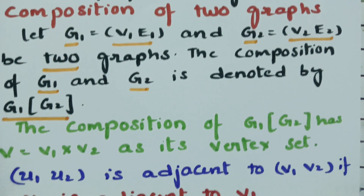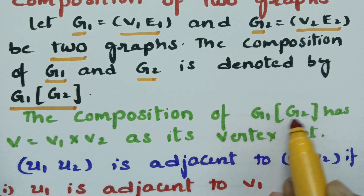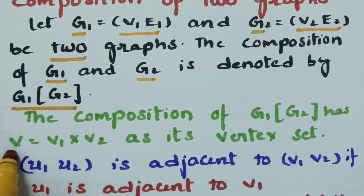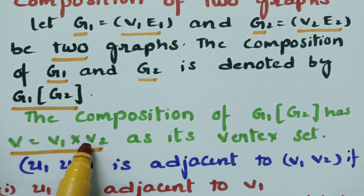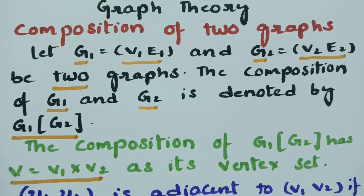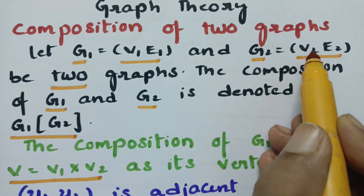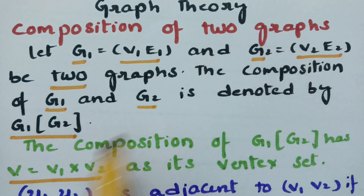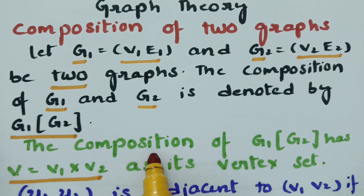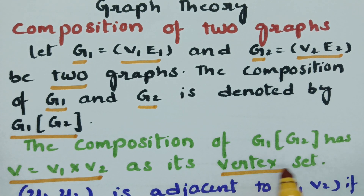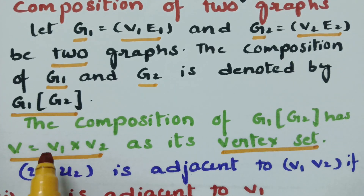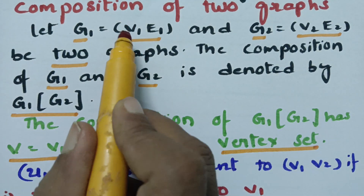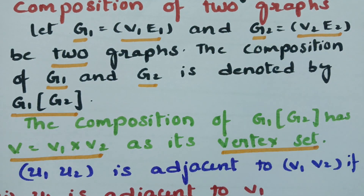There is a condition here. The composition G1 of G2 has the vertex set V = V1 cross V2. This is V1 and this is V2. We have to make a cross product of V1 and V2 in order to get the fresh vertex set for this composition of two graphs. The vertex set is obtained by the cross product of the first graph and the second graph vertex set.